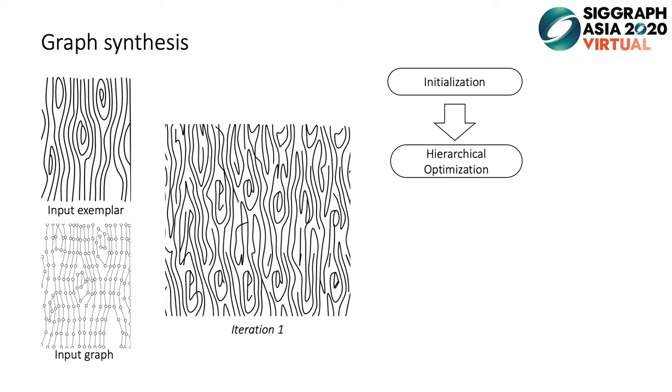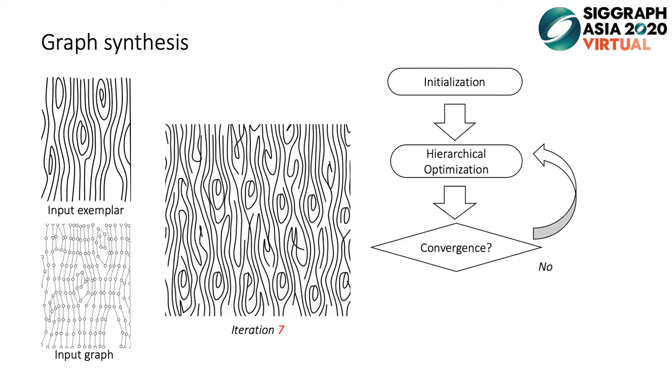Our algorithm optimizes the initial samples to maximize the similarity between input and output graphs. Here we show the results after one iteration. The iterative optimization continues until convergence. To speed up the optimization, our algorithm runs hierarchically by using denser and denser samples.